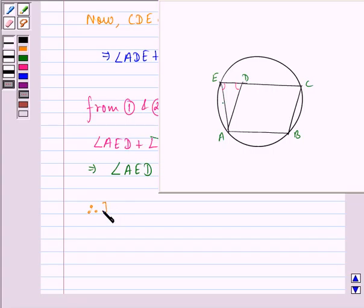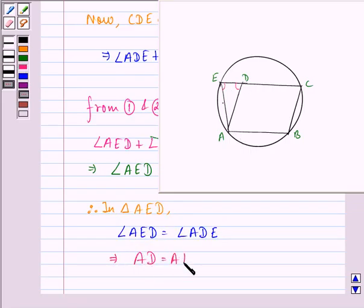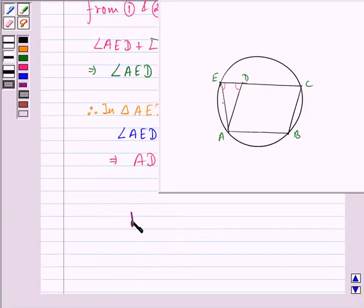Therefore, in triangle AED, we have angle AED equals angle ADE. Since these two angles are equal, the sides opposite to them will also be equal, which implies that AD equals AE. This was what we were supposed to prove in this question.